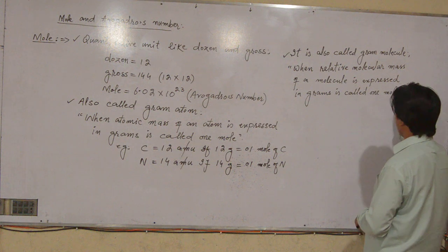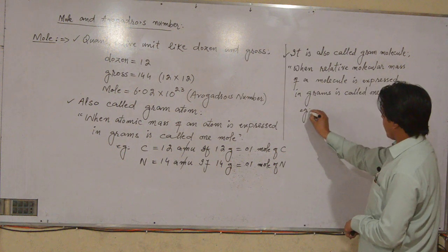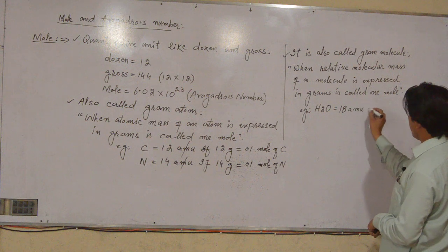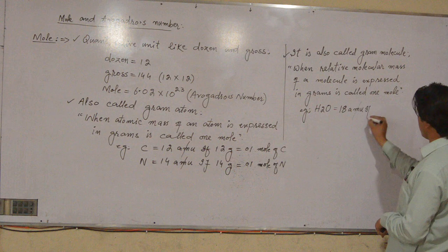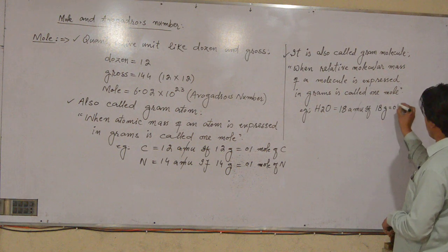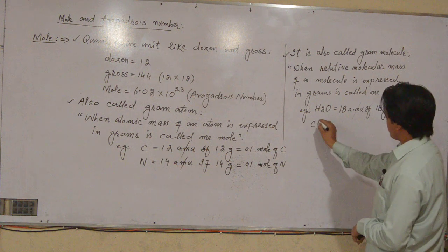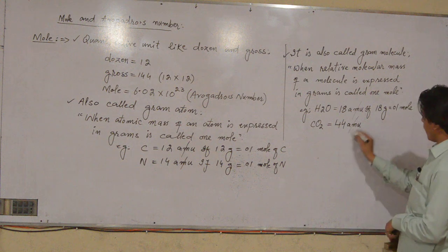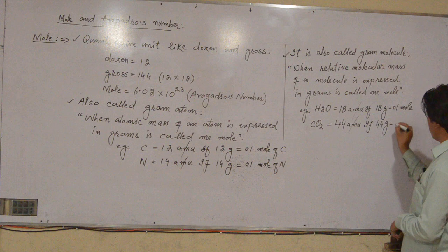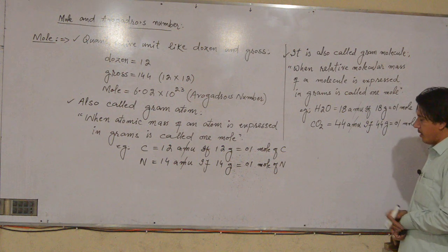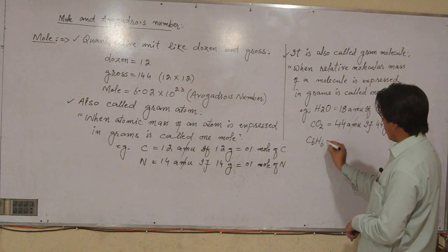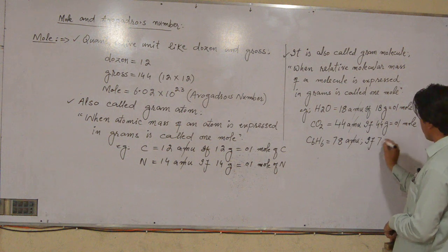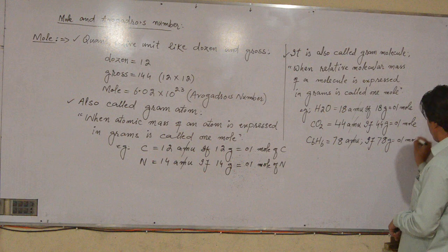For example, H2O — one molecule of water has a molecular mass of 18 amu. If represented in grams, 18 grams equals one mole of water. Carbon dioxide has a molecular mass of 44 amu, so 44 grams equals one mole of carbon dioxide. Benzene (C6H6) has a molecular mass of 78 amu, so 78 grams equals one mole of benzene.